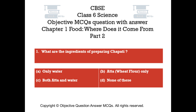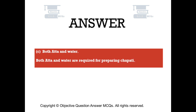Question number 1. What are the ingredients of preparing chapati? Option A: Only water. Option B: Atta (wheat flour) only. Option C: Both Atta and water. Option D: None of these. The right answer is Option C. Both Atta and water are required for preparing chapati.